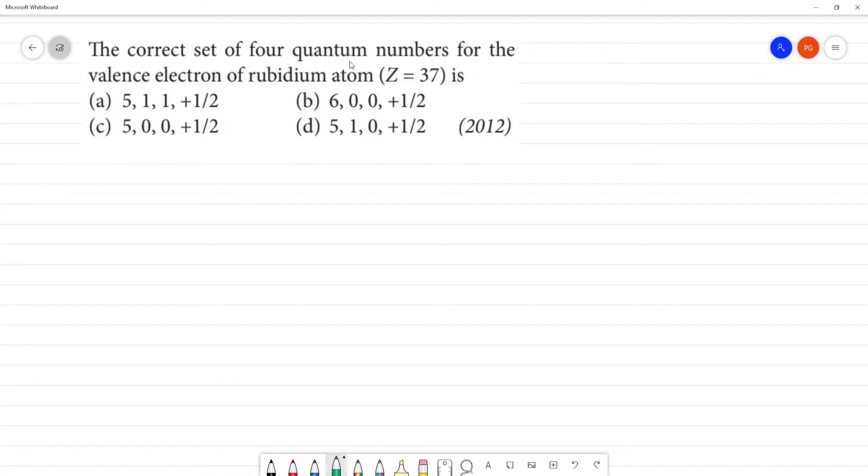The correct set of four quantum numbers for the valence electron of rubidium atom. Rubidium atom Z is equal to 37, so we can get this electronic configuration.